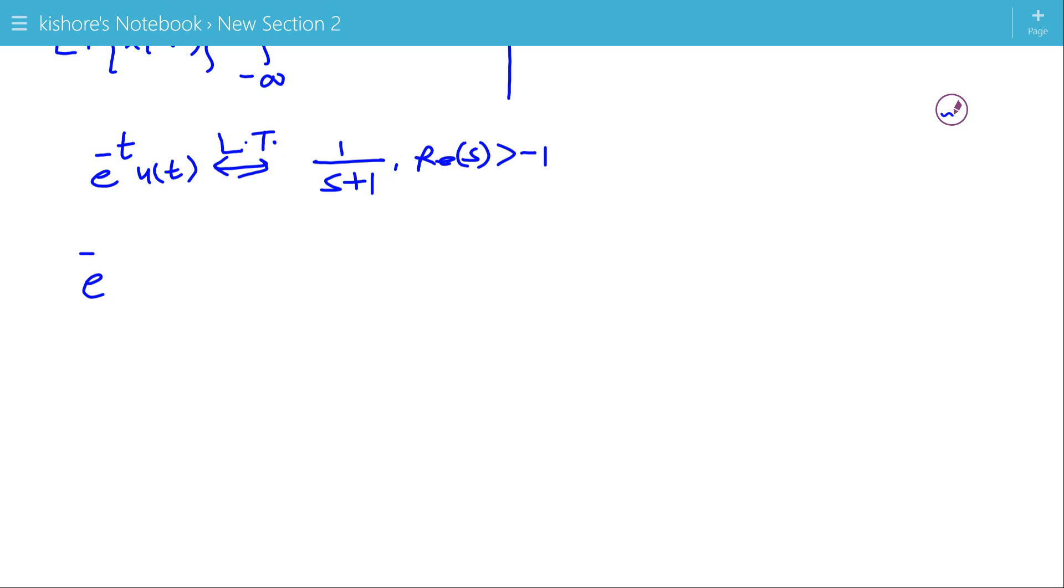Now this signal is scaled. The new signal is, suppose this one is x(t), so new signal is x(2t), that is e to the power minus 2t u(2t), and u of 2t is u(t). So the Laplace Transform of scaled version of x(t) is now 1 by mod 2 into 1 upon S by 2 plus 1.